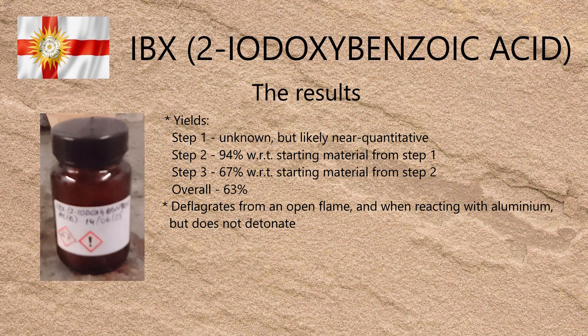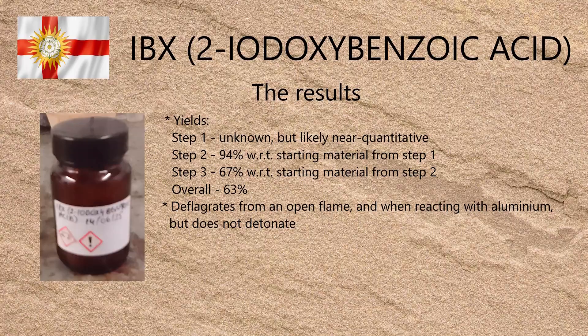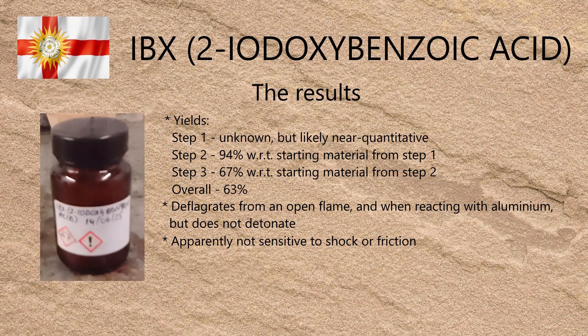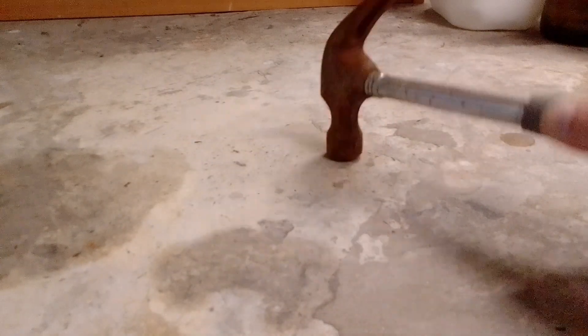IBX has a reputation for being explosive at high temperatures, over 200 degrees. It deflagrates from an open flame and reacts energetically with aluminium on heating, but in my experience it does not actually detonate. In any case it only requires mild reaction conditions to work as an oxidant, and temperatures stay well within two figures. It's also been claimed that IBX is shock sensitive. This is probably more true of the bromate-made material, which likely contains impurities that act as fuel. I took some of the oxone-made material and dropped it hard onto a concrete floor, and couldn't set it off at all. It also seemed to be insensitive to friction.